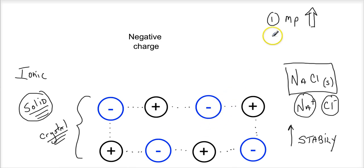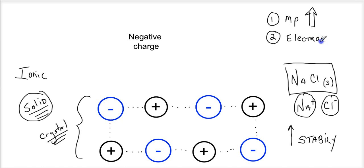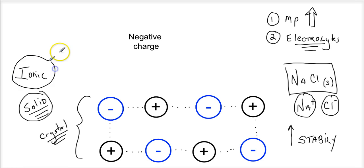The second property is how they conduct electricity, and this is very important. Because they do so in a particular manner, they are called electrolytes. Electrolytes are nothing more than ions that have an ability to conduct electricity. And salts — all ionic compounds — are electrolytes.